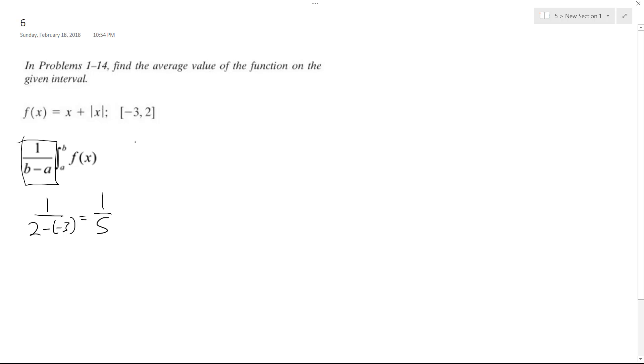Breaking this down, the integral is going to be from negative 3 to 2 for x plus absolute value of x, but to account for the absolute value, it's going to have to be broken down into negative 3 to 0, and it's going to be negative x plus x.